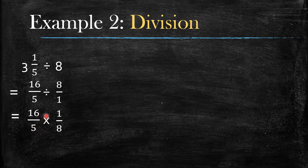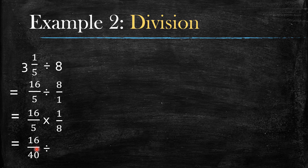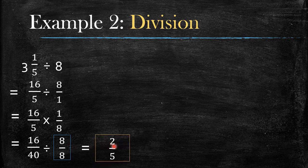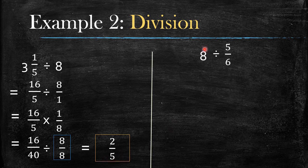So you say 16 times 1, which equals 16, and 5 times 8, which equals 40. You can type this into your calculator, or use the highest common factor of 16 and 40, which is 8. So 16 divided by 8 gives you 2, and 40 divided by 8 gives you 5. This gives you the final answer: 2 over 5.